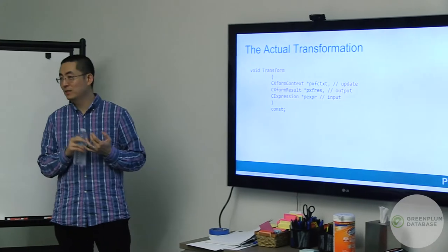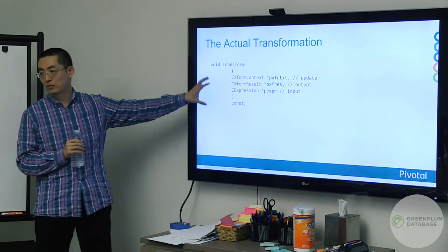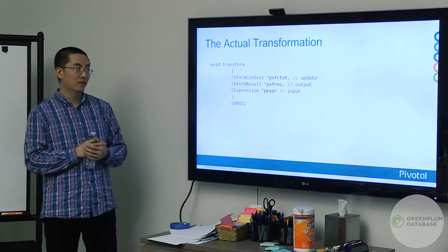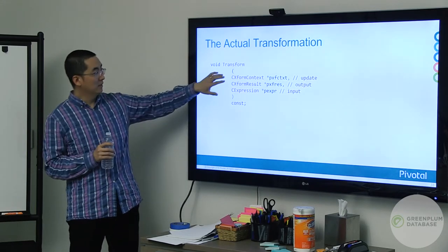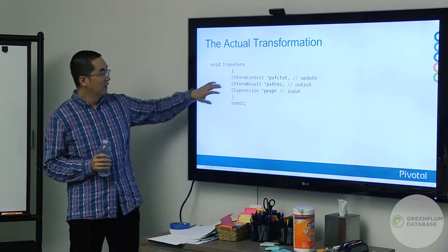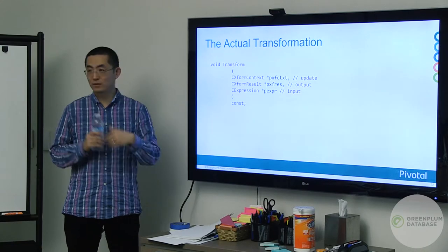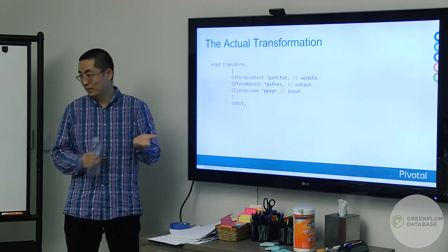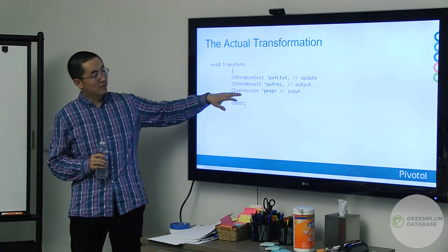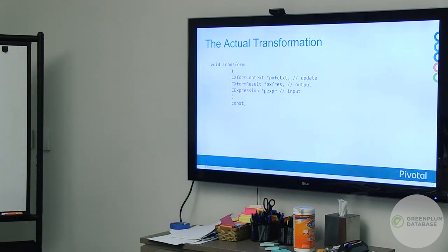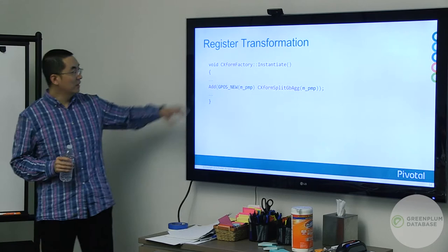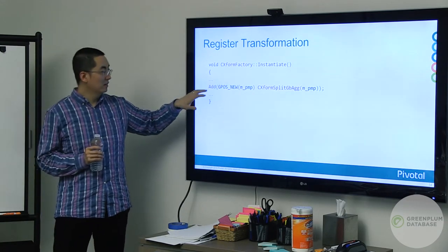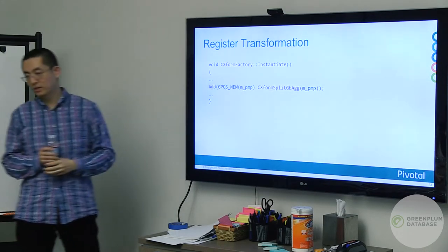After the pattern matches and the precondition check passes, we call the function to do the transformation — all the details are implemented in this function. It takes three parameters: the optimization context (information we'll use and update), the result (if we have two ways of doing the aggregate — two-stage or three-stage — all alternatives will be generated here), and the input expression we're applying our rule on. The rule also has to be registered in the transformation factory class to make it usable.